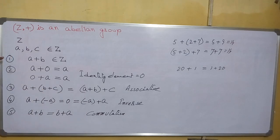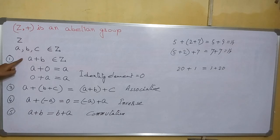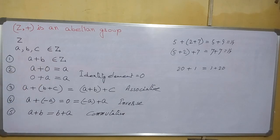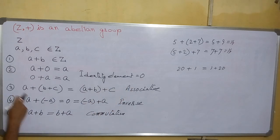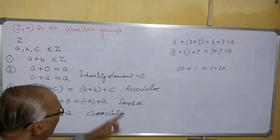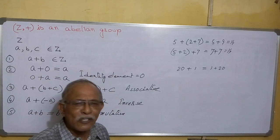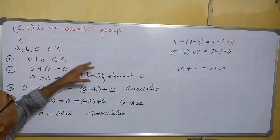So, in this way, we have shown all five properties to prove that (ℤ, +) is an Abelian group. First, we proved closure: A plus B belongs to ℤ for any A, B in ℤ. Second, we found the identity element is 0. Third, we showed addition is associative. Fourth, for each element A there is an inverse element minus A. And finally, A plus B equals B plus A — it is commutative. Since all these properties hold, (ℤ, +) is an Abelian group.